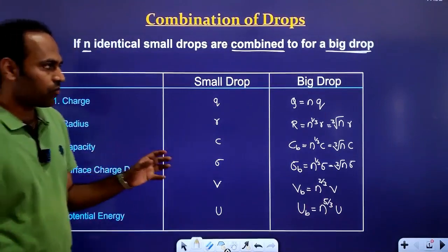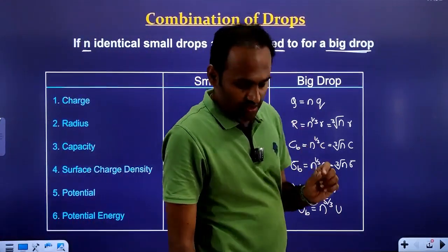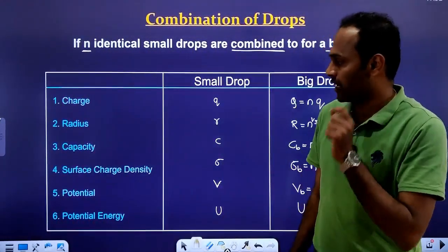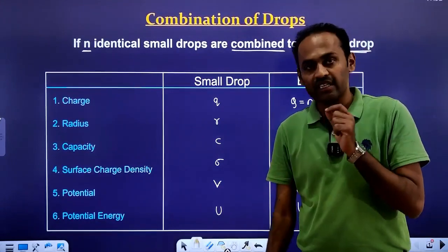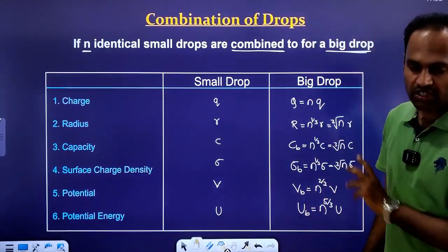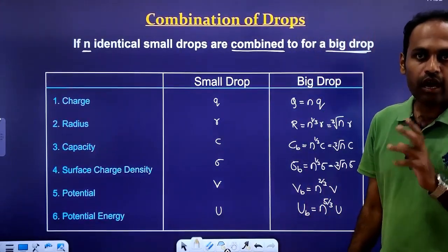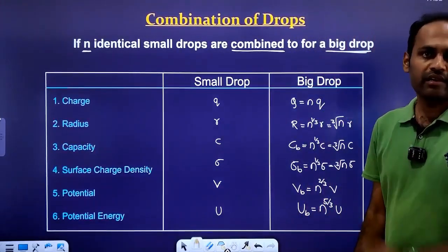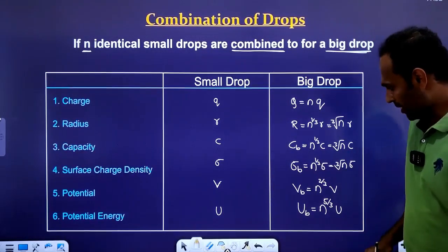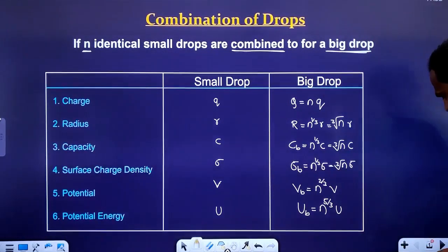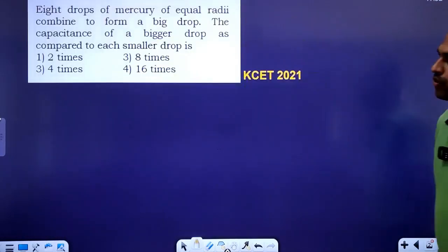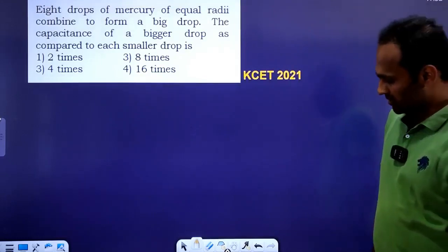This is how we write the charge, radius, surface charge density, capacity, potential, and potential energy after combining the N similar drops. Next, we will go for the objectives on this.